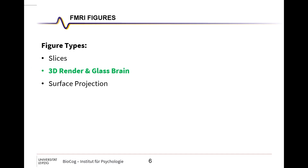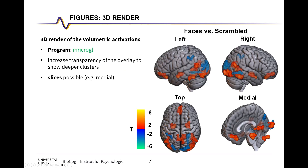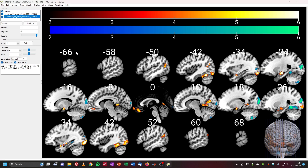The next type of figure is 3D renders and glass brain projections. We have volumetric activations in 3D space, so we can render them as 3D renders. In MRIcroGL you can increase the transparency of your overlays to show deeper clusters inside the brain. It's also possible to slice along the medial surface to reveal clusters that are deep inside, for example on the medial surface.